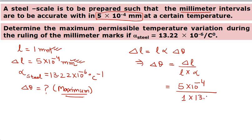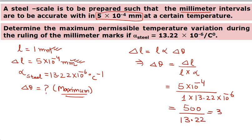The 10⁻⁶ cancels out and 10⁺² comes up. So we get 500 divided by 13.22, and on calculation you will get 37.8 degree Celsius, which is the maximum permissible change in temperature. That's all.